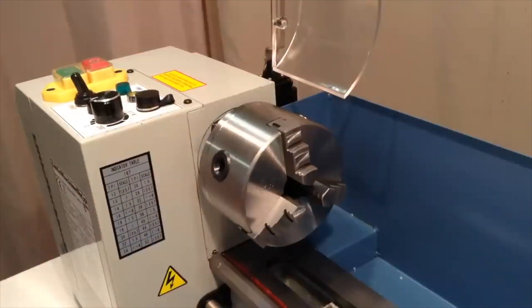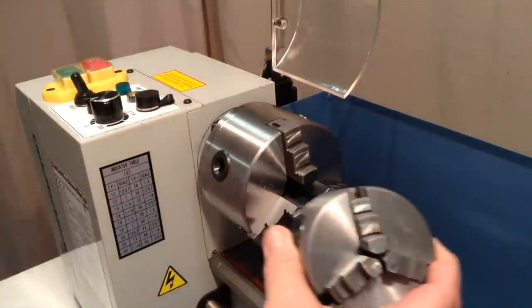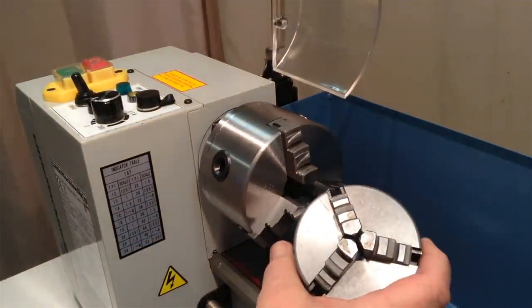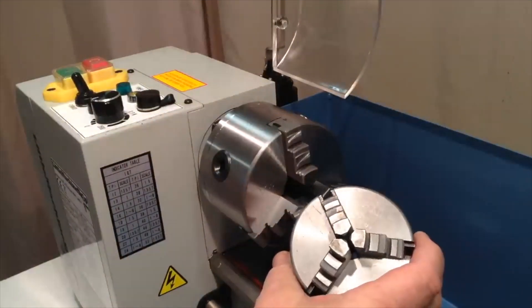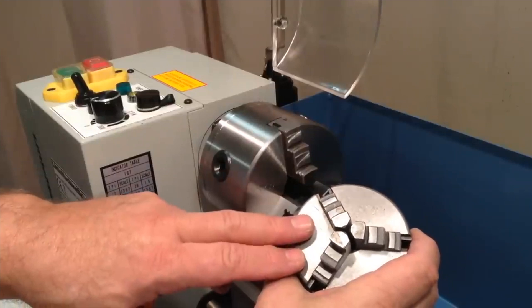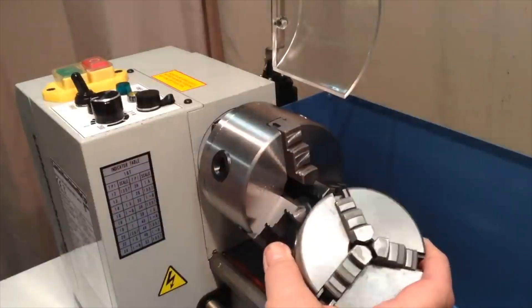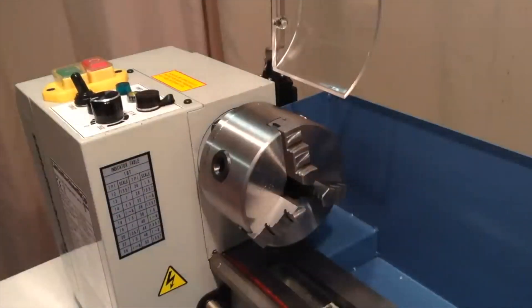That's an interesting thing because traditionally every mini lathe I've seen up until this one, and there's been quite a few of them over the years, has had a three inch diameter chuck as the stock chuck, and that turns out to be 80 millimeters.